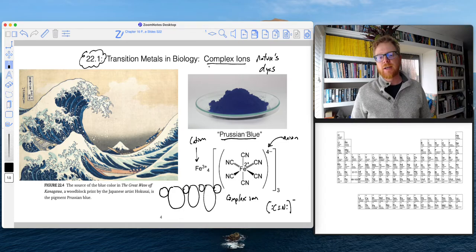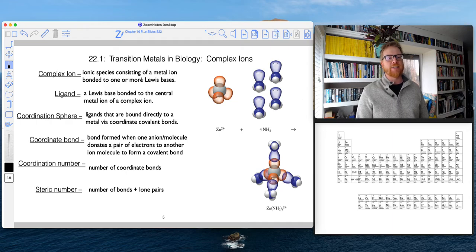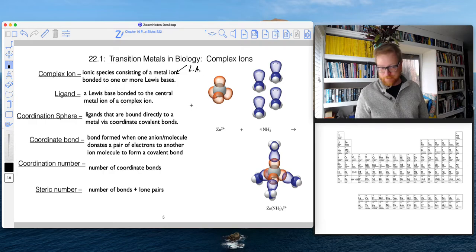Okay, so let's break this down. A few definitions. So a complex ion is an ionic species consisting of a metal ion - and I'll write a Lewis acid - bonded to one or more Lewis bases.